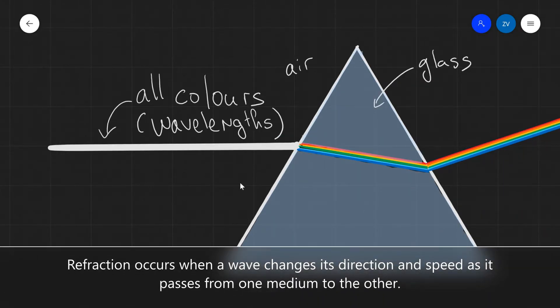Refraction occurs whenever a wave changes its medium. For instance, over here we have light, which is white light consisting of all the different wavelengths, and it moves right at this boundary between air and glass. We can see that it will change its direction and will also change its speed. Refraction will occur once again at this position, just there, when it's moving from glass back into air.